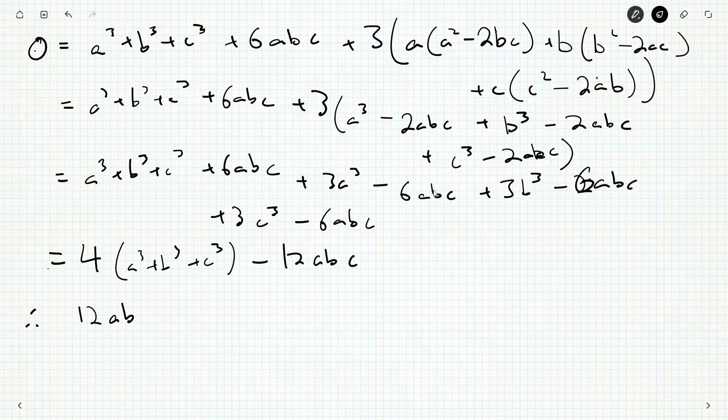So, bring them over to the other side. We get 12abc is 4a cubed plus 4b cubed plus 4c cubed. And dividing by 4 on both sides, we get exactly what they asked us for.